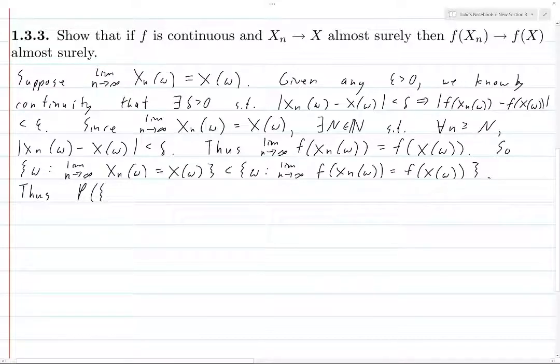Therefore, the measure of the set on the left... and I'll just denote this by, this is limit as n goes to infinity, x_n equals x. I'll drop the omegas here. The probability of this is less than or equal to the probability or the measure of the set where this limit of f of x_n equals f of x.